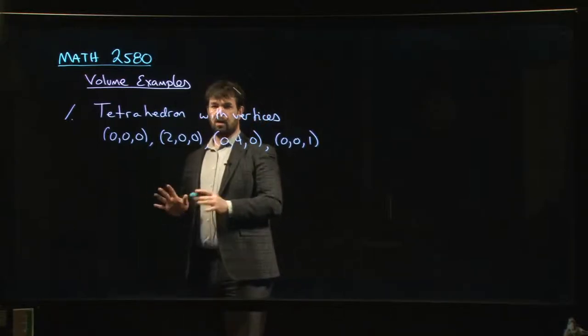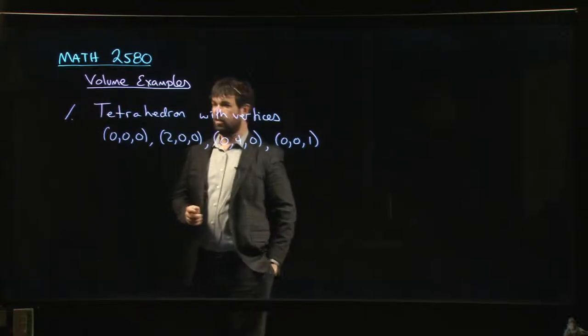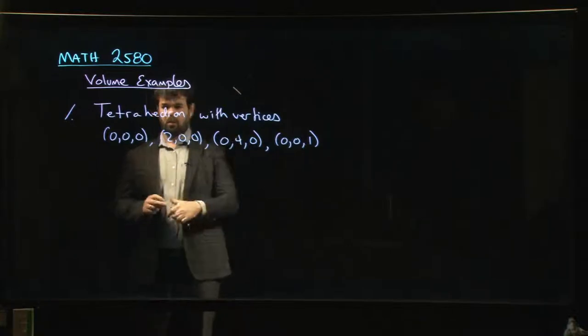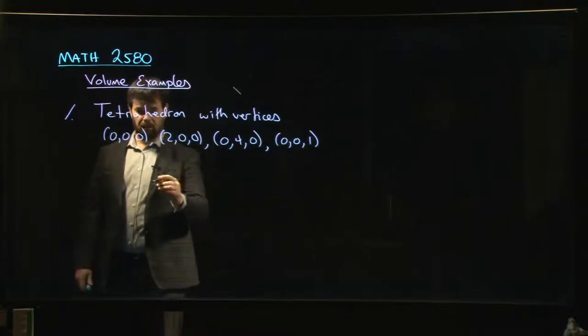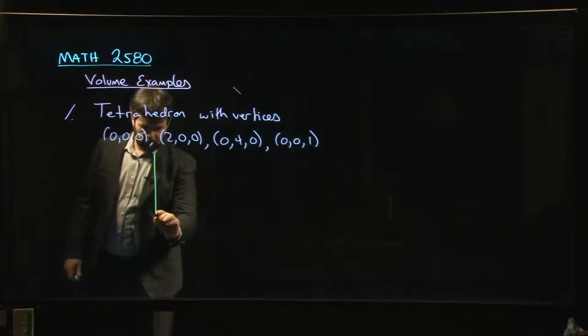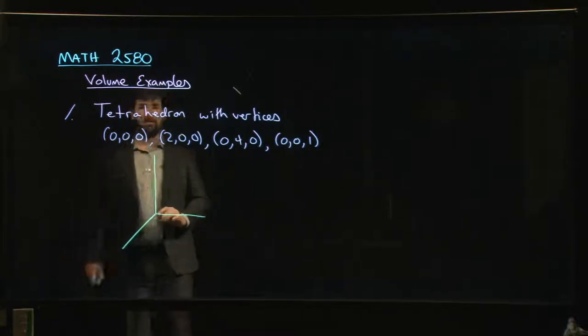So for this particular example here, before we can do anything, of course, we need to know what we're looking at. So we want this tetrahedron with these four vertices. So a tetrahedron is sort of a three-dimensional analog of a triangle. We have something that looks like the following. Let's draw our coordinate system in.